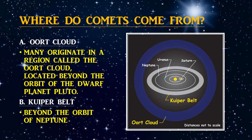Where do comets come from? They came from the Oort Cloud, located beyond the orbit of the dwarf planet Pluto. They are also found in the Kuiper Belt, located beyond the orbit of Neptune.